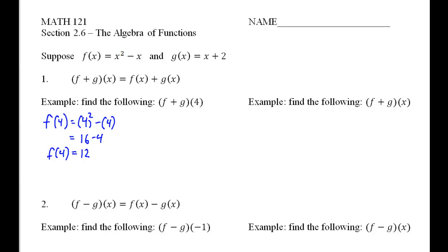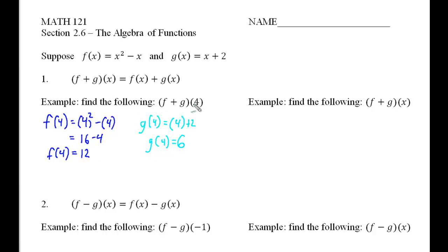Then we're going to plug that into my g. I'm going to take my g equation and plug my 4 in here. My g of 4 is going to be, in parentheses, 4 plus 2. So my g of 4 is 6. To answer the question, f plus g of 4 is to take our 12 plus 6 and add those together. My f plus g of 4 is 12 plus 6, which is 18.